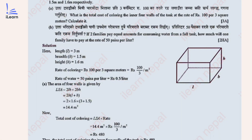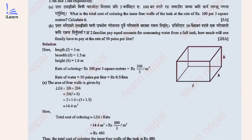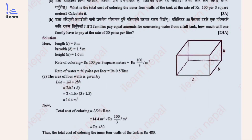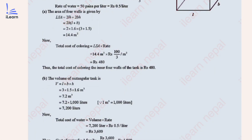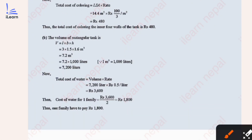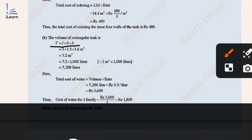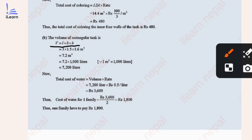For part (b): if two families pay equal amounts for consuming water from a full tank, how much will one family have to pay at the rate of 50 paisa per liter? First we find the volume of the tank. The volume formula is L × B × H, which gives 7.2 cubic meters.